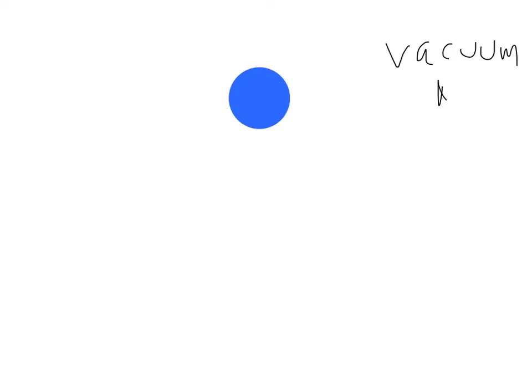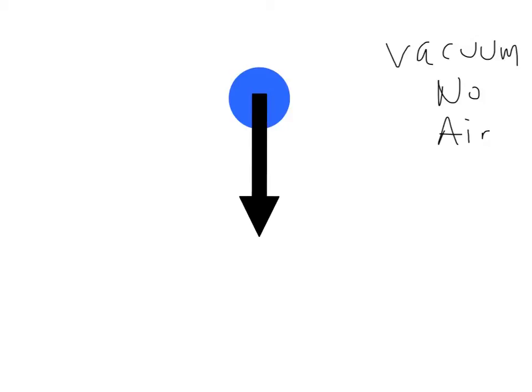Let's start with a simple example. We're going to start with a ball falling in a vacuum, which simply means there's no air. This ball is only going to be subject to one force, which is gravity. So for the force diagram — or free body diagram — for a ball falling in a vacuum, I'm going to draw an arrow from the center of the ball pointing straight down, because that's where the earth is, which is the source of the gravity acting on the ball. And then I have to label the force, so I'll write F-gravity or F-grav. That's the force diagram for a ball falling in a vacuum.